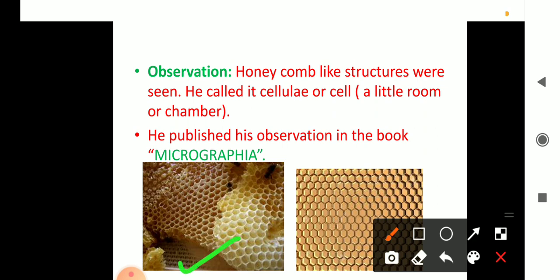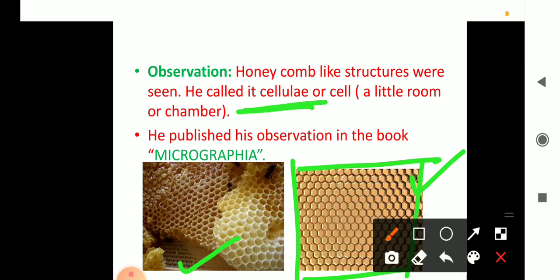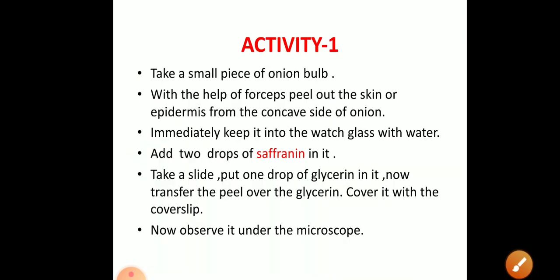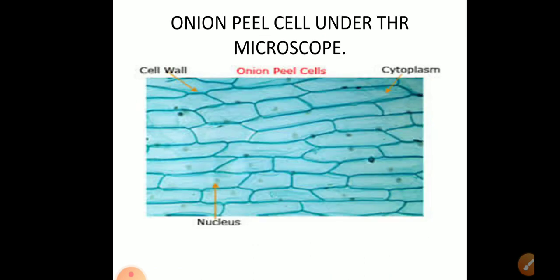He observed a honeycomb-like structure in that cork slice. You can see the honeycomb here — the inner side has hexagonal chambers, and honey is stored inside them. The same type of structures were found in the cork slice. He called these chambers 'cellulae' — meaning a little room — and published his observations in a book called Micrographia.